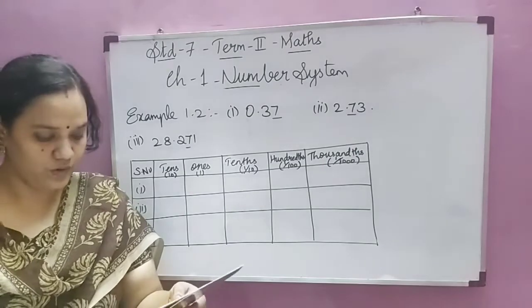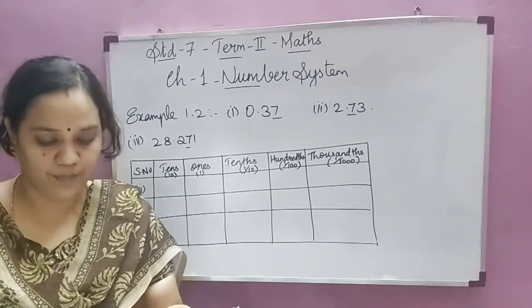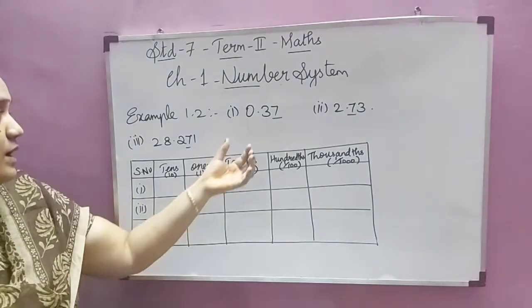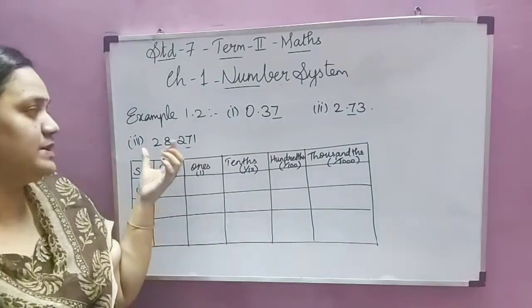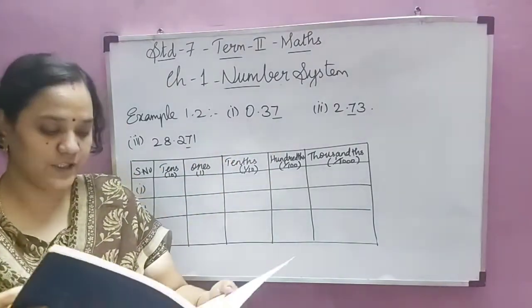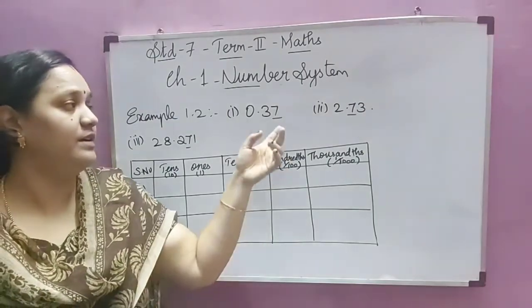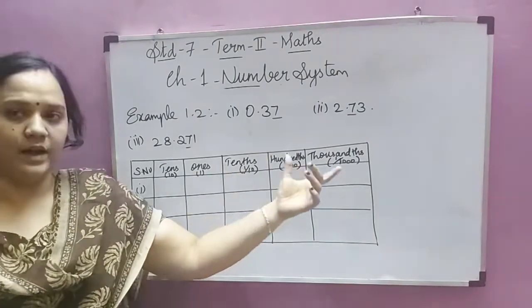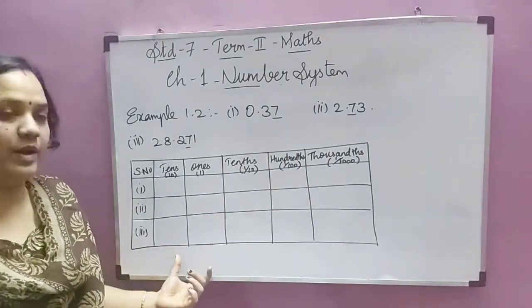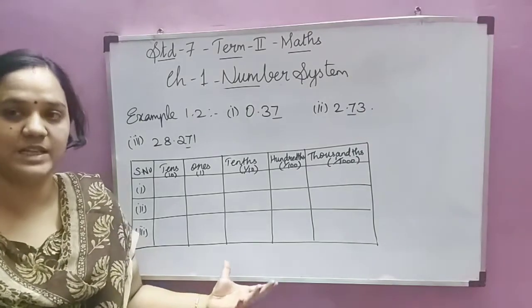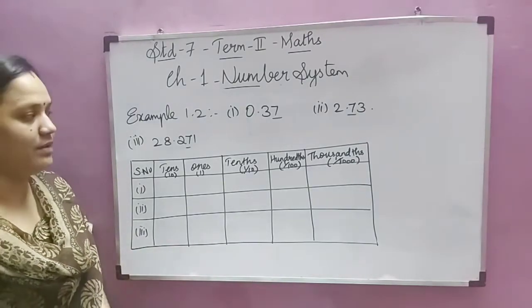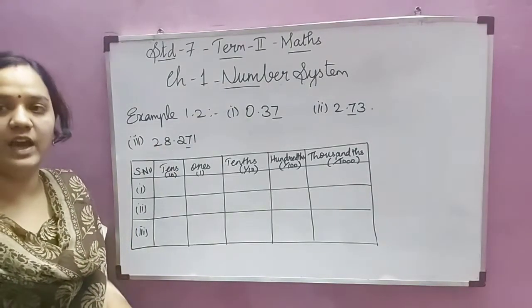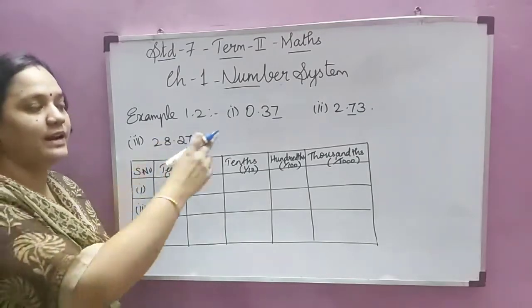Example 1.2: write the following in the place value grid and find the place value of the underlined digits. The place value grid means we write the place values in a tabular column structure. We write the given numbers in correct order in the grid and then write the place value of the underlined digit.